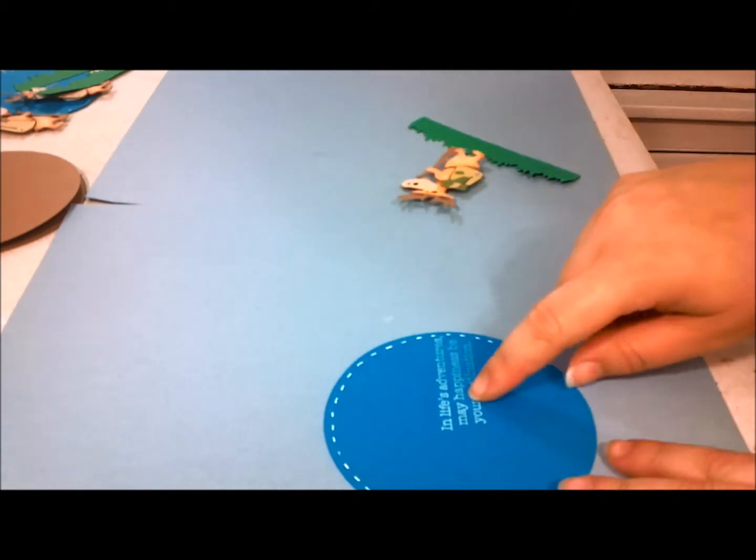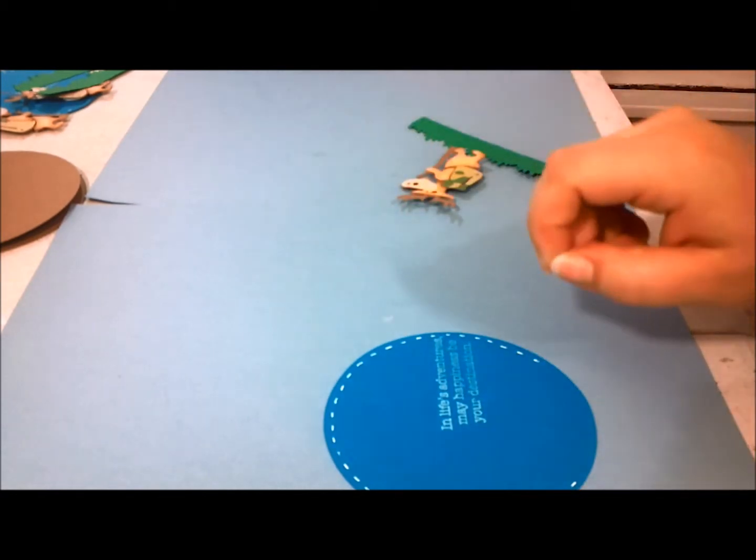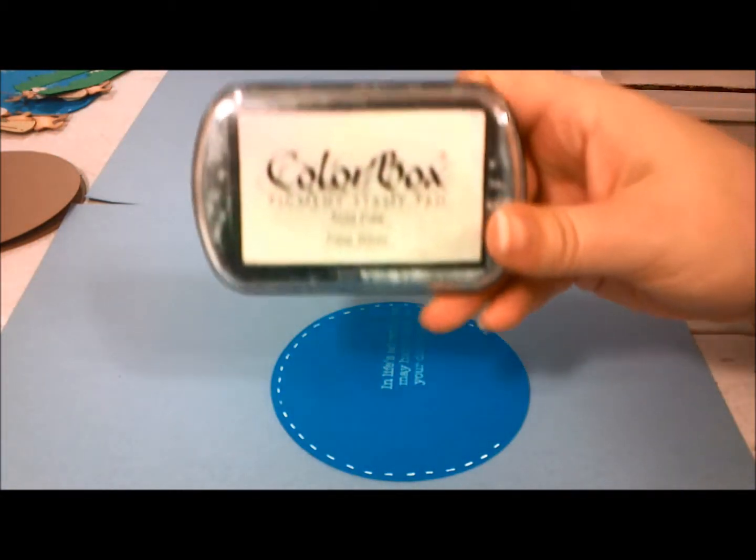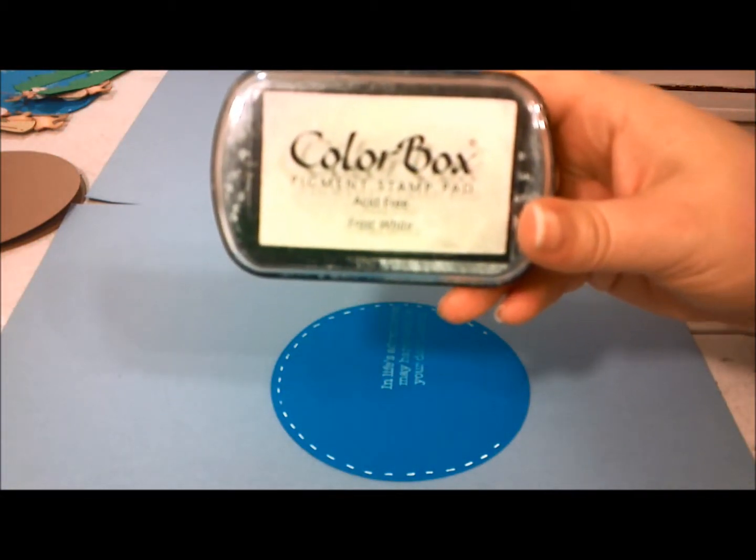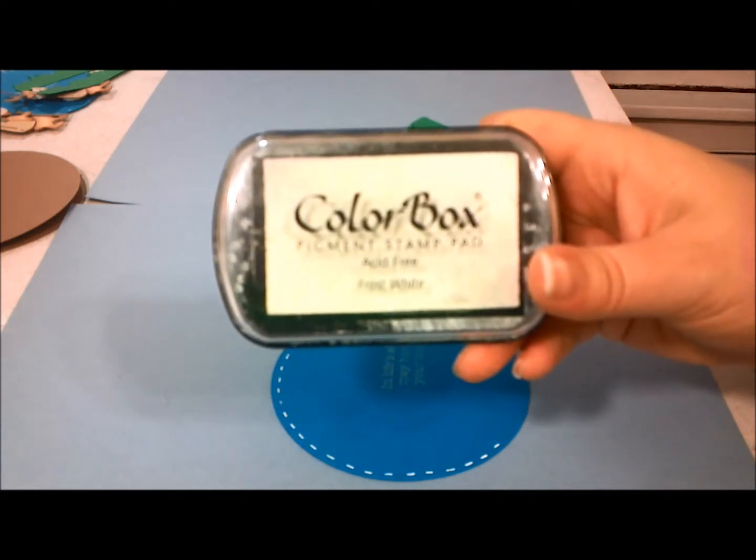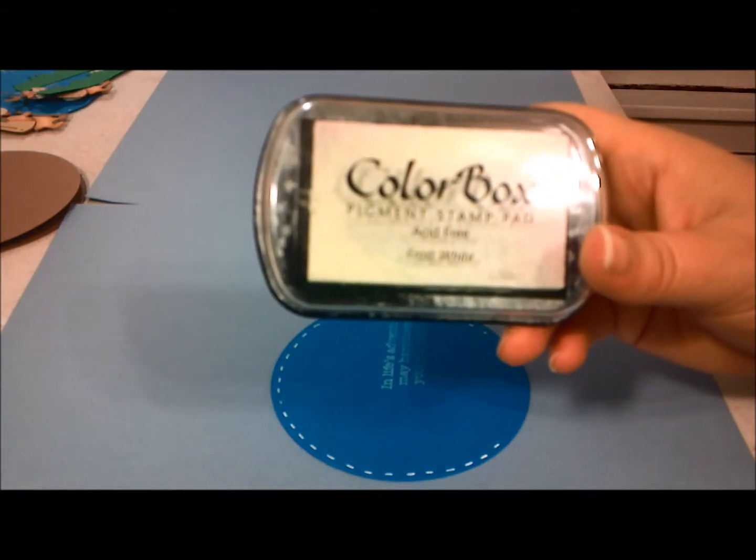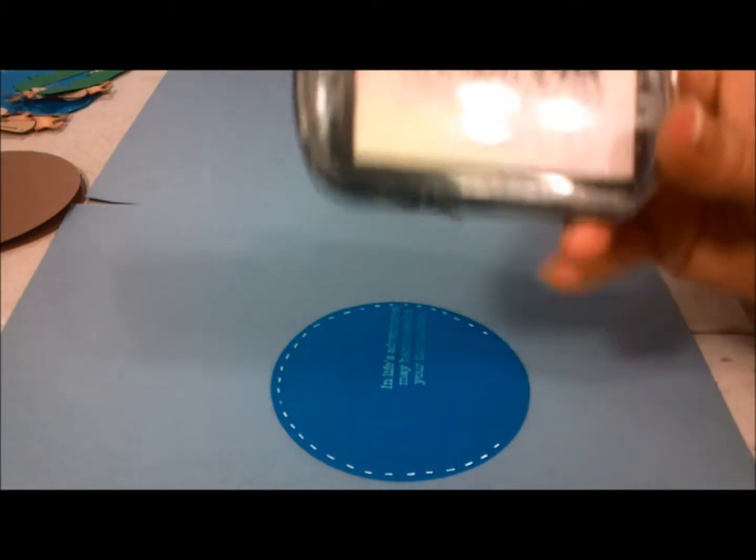And then I stamped the sentiment on there and I used Colorbox white ink. And this is the best I've found for white ink that shows up on dark paper. I've tried a lot of different kinds and I haven't found any other ones that work as good as this does.